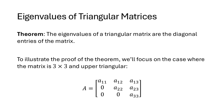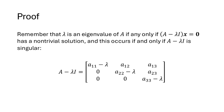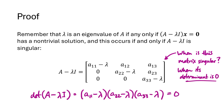Let's illustrate this with a 3x3 upper triangular matrix. Lambda is an eigenvalue if and only if (A minus lambda I) times x equals 0 has non-trivial solutions, which happens if and only if A minus lambda I is non-invertible. For a triangular matrix, subtracting lambda from diagonal entries keeps it triangular, so the determinant equals (A11 minus lambda)(A22 minus lambda)(A33 minus lambda). This equals zero only when lambda equals A11, A22, or A33 — the diagonal entries.